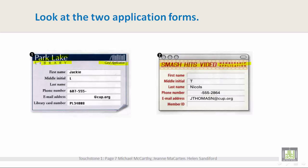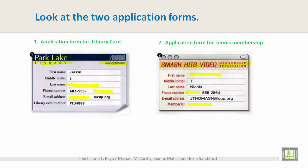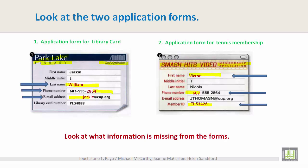We can see that there are a few things missing in each of these application forms. Let me show you what they are. We have an application form for a library card and an application form for a tennis membership. Do you see the information that's missing? Please pause your screen and take a look.